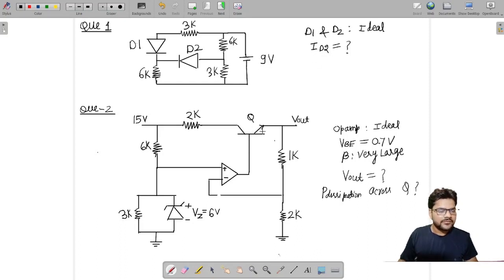In another question, we have one BJT, one op-amp, and one Zener diode connected. The Zener diode has a breakdown voltage of 6 volts. We are given that the op-amp is ideal and VBE, that is base to emitter voltage for this BJT Q, is 0.7 volts. We are also given that for this BJT, beta is very large, and we need to find out V output, that is the output voltage, and power dissipation across Q, the power dissipation across this BJT.